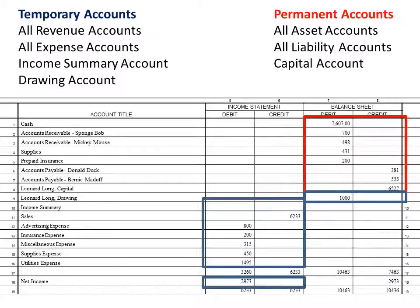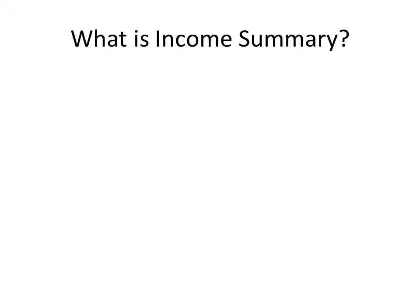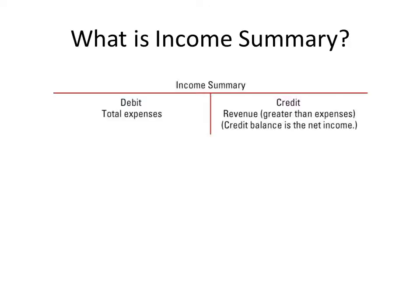We are not going to close the permanent accounts. We are only resetting the revenue accounts. Think about it — just because you have $400 of supplies and it's the end of the fiscal period, does that mean at the beginning of the next period you have nothing? No, you still have those $400 and they continue on. So income summary is basically a temporary account that's created to help us close the accounts.